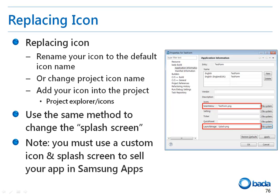First, to change the icon, you need to prepare a .png file of the icon size. Rename the .png file to application.name.png and put it into the project to change the icon. You can confirm the icon by pressing the Home key after running the application. You can change the splash screen image in the same way. Note that you cannot use the default icon and splash screen to sell the application in Samsung Apps — you must prepare a custom icon and splash screen.